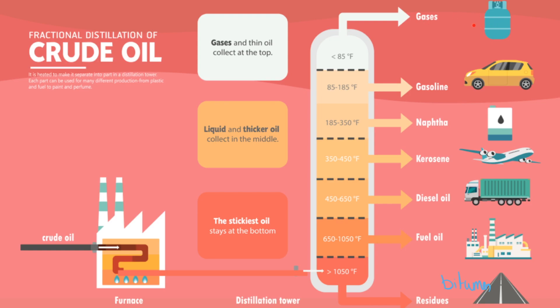We have gases at the top, then petrol, naphtha, kerosene which is fuel for planes, diesel, and then fuel for boats. Short hydrocarbons come off at the top and long hydrocarbons come off at the bottom. Things at the top are going to be really flammable, whereas things at the bottom aren't. Things at the bottom are going to be really viscous, whereas things at the top aren't.